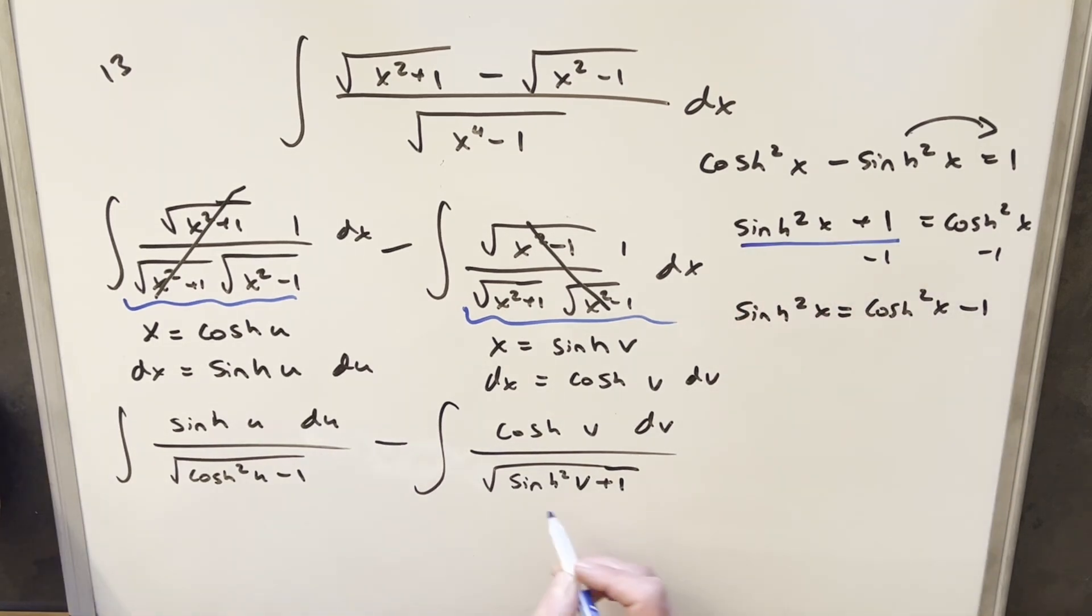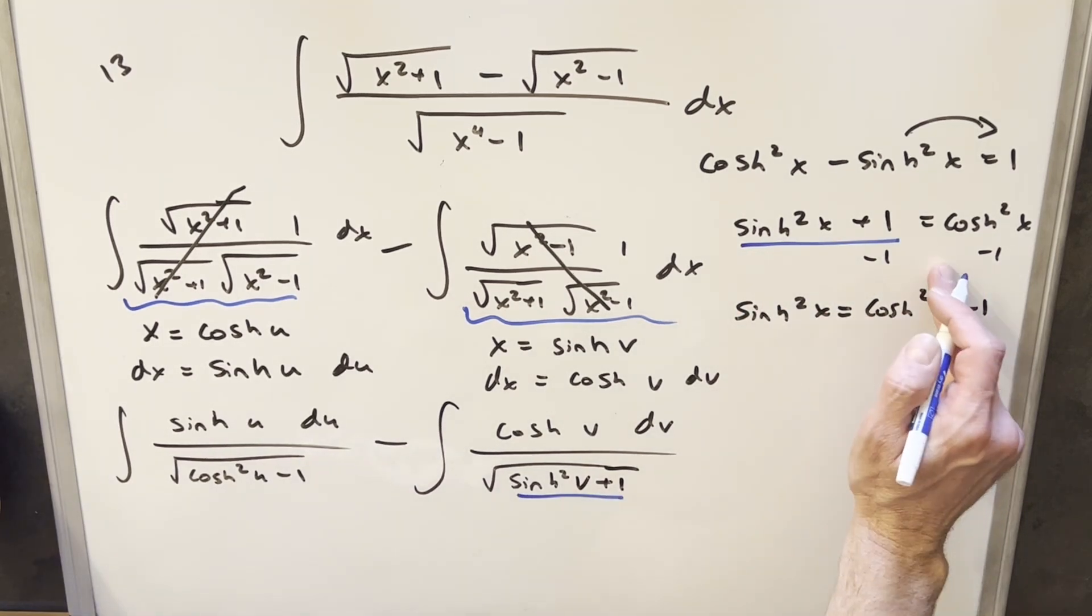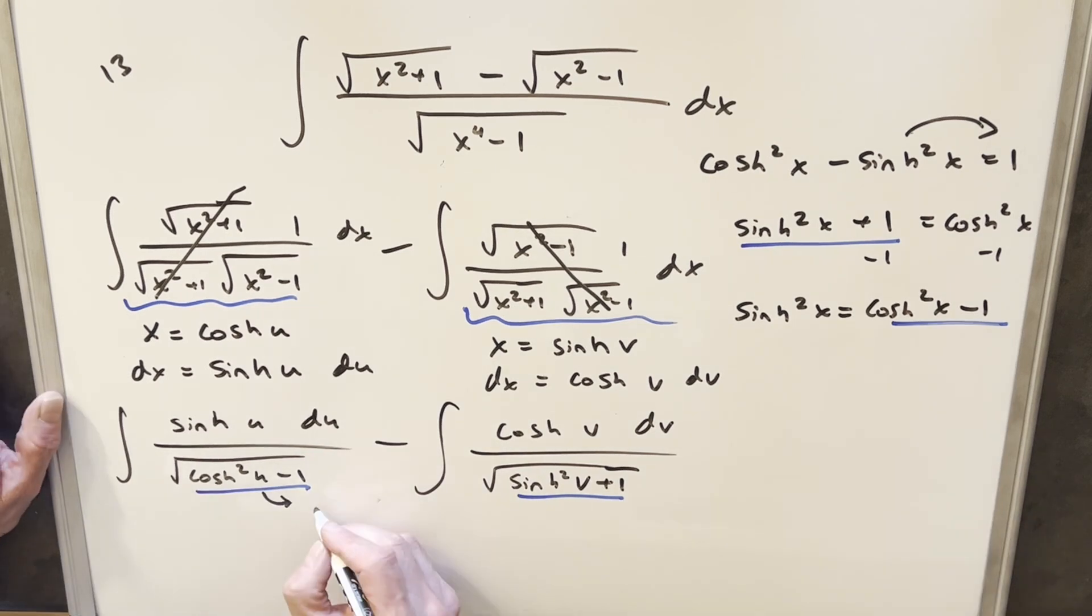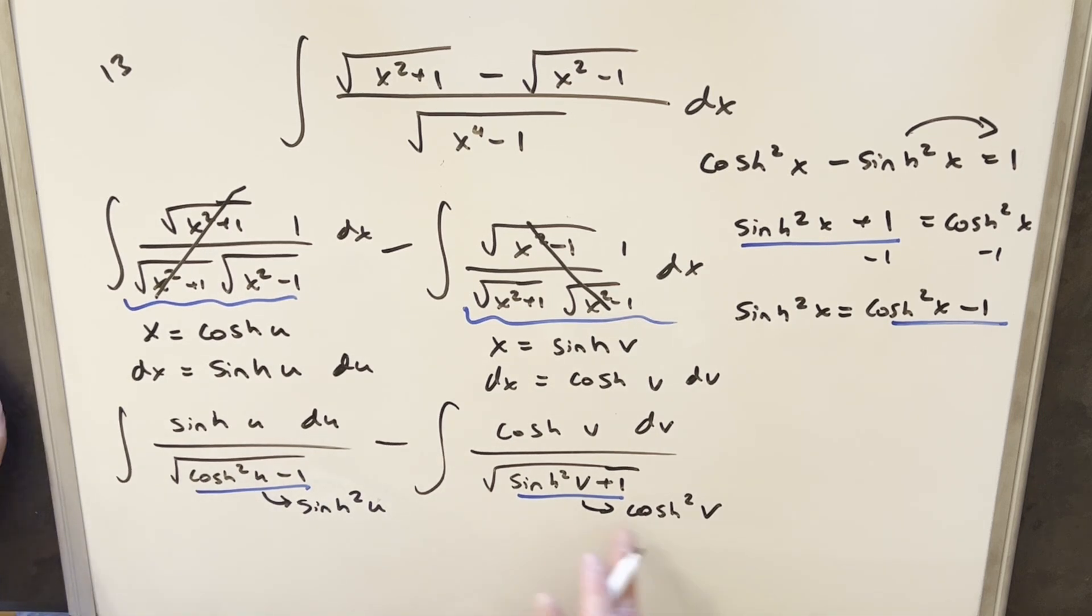But then we can use this for this one in order to reduce this to cosh squared. So using this here, this is going to become sinh squared of u, and then using this one, we can write this as cosh squared of v. But we're inside the square root. So if we take the square root of cosh squared of v, we get cosh v, and we're over cosh v. So this is going to just cancel all the way down to one. The same thing is going to happen over here, because we're inside the square root, this is going to become just sinh over sinh. So this is one.